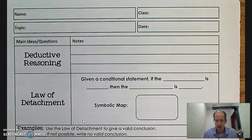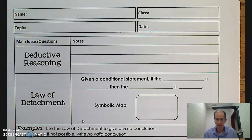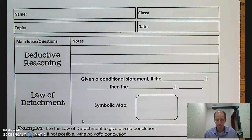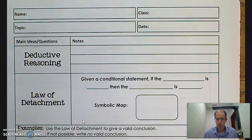Hi, we're in WorkPacket 2.2, on page number seven, and we're going to talk about deductive reasoning. We've talked about inductive reasoning — reasoning from the specific to the general, finding a pattern, making a conjecture, that's a statement which can be true or false, and disproving it with a counterexample or making a prediction with it.